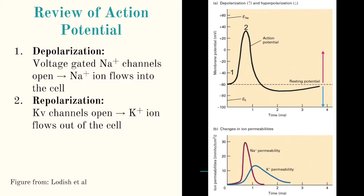During action potential, a cellular signal causes a change in the membrane potential. Once the membrane potential reaches a threshold, the voltage-gated sodium channels will open. As a result, sodium flows into the cell, marking the beginning of depolarization. Once the membrane potential becomes sufficiently positive, the sodium channels will close and the KV channels will open, marking the beginning of repolarization.